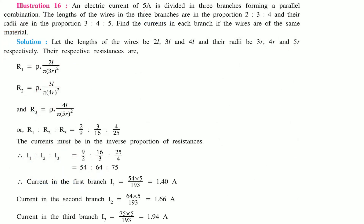An electric current of 5 amperes is divided into 3 branches forming a parallel combination. The lengths of wire in the 3 branches are in the ratio L1:L2:L3 = 2:3:4 and their radii are in the ratio 3:4:5. So we use 2L, 3L, 4L for lengths and 3r, 4r, 5r for radii. Using R = ρL/A, we calculate R1 using L1=2L and A1=π(3r)².